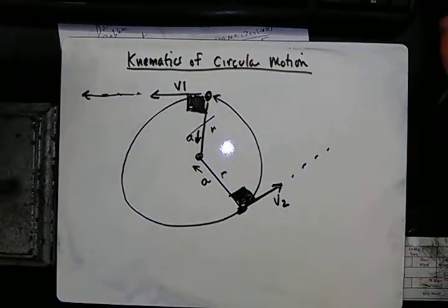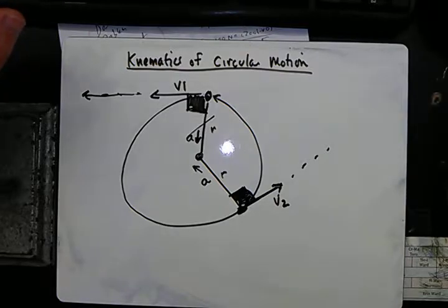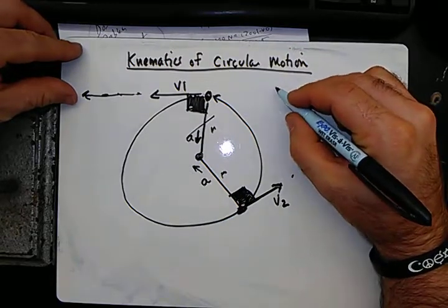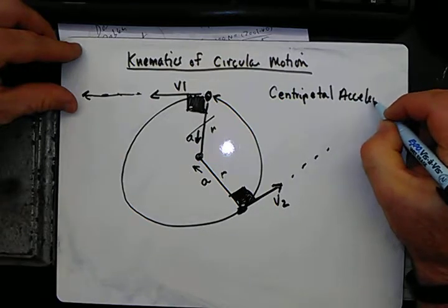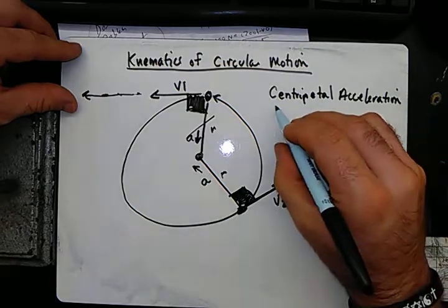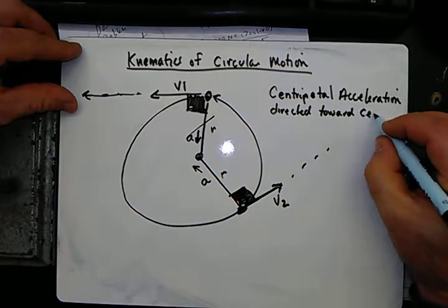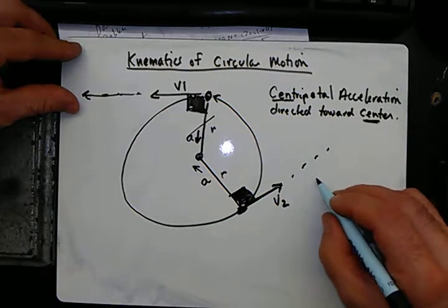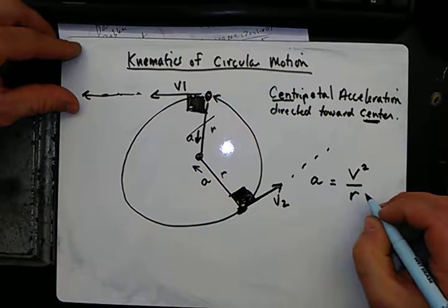We can relate this to when Newton was sitting next to the apple tree — he saw the moon and said there must be some force from the Earth pulling the moon toward the Earth, while the velocity keeps it in orbit. When looking at this acceleration, we can come up with a formula. This acceleration is called the centripetal acceleration, and it is always directed toward the center — as the name says, centripetal means center.